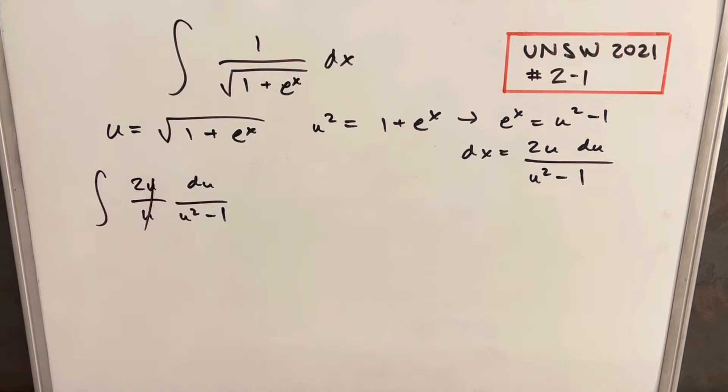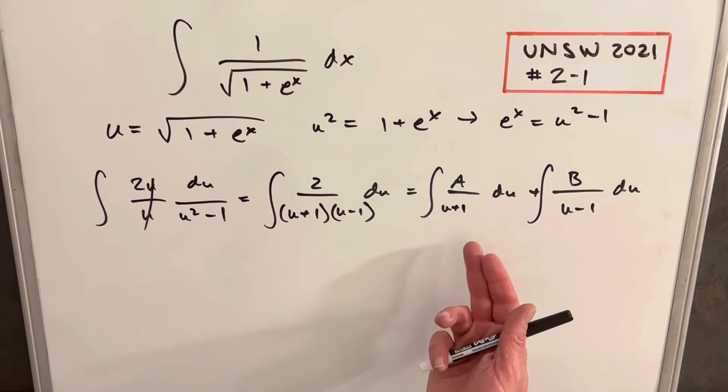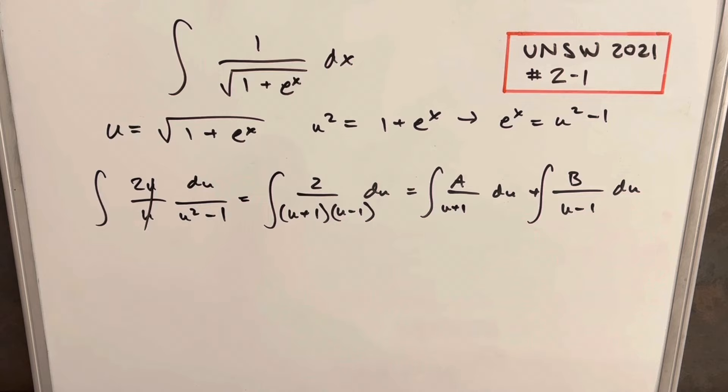The u's cancel, leaving us with 2 over u squared minus 1. We can factor this as (u plus 1)(u minus 1) and use partial fractions. This is the simplest partial fraction scenario with two linear terms, so we can use the cover-up method to find our A and B values.